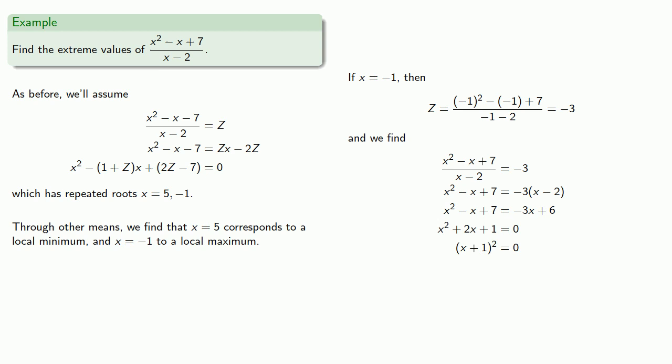And through other means we find that x equals 5 corresponds to a local minimum, and x equals negative 1 to a local maximum.